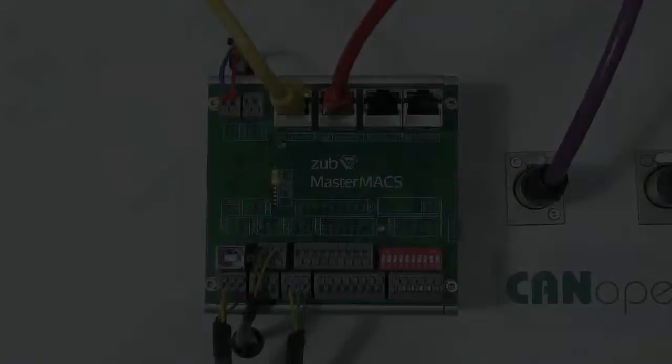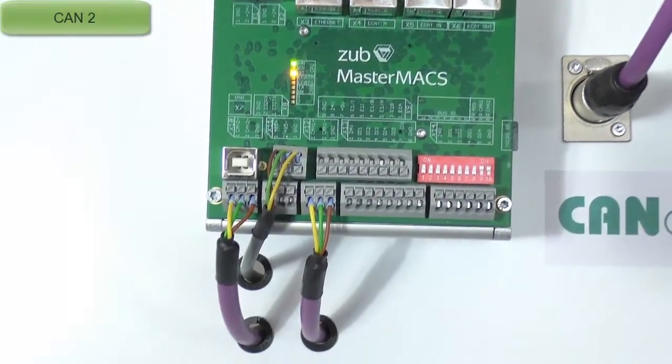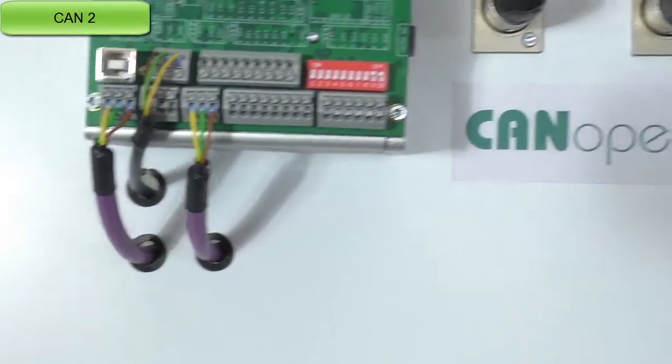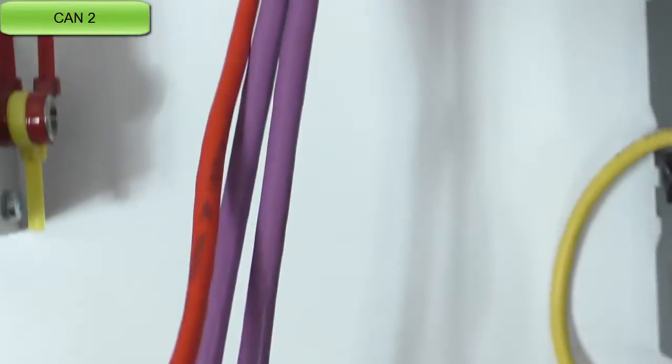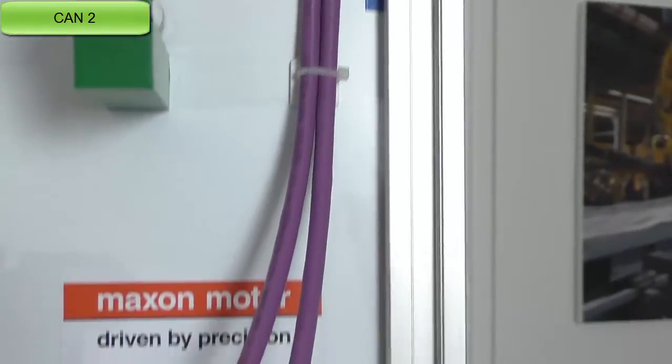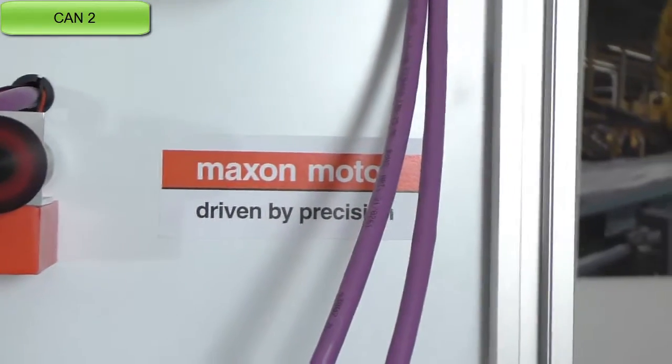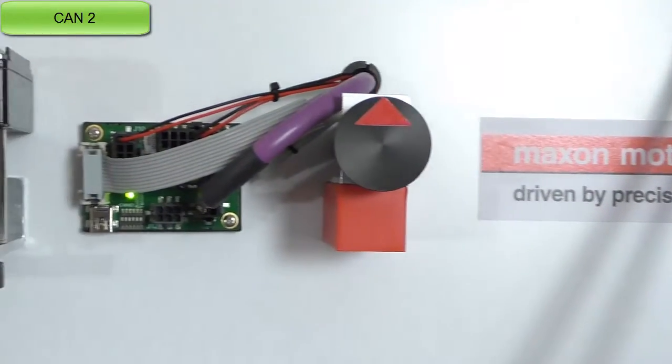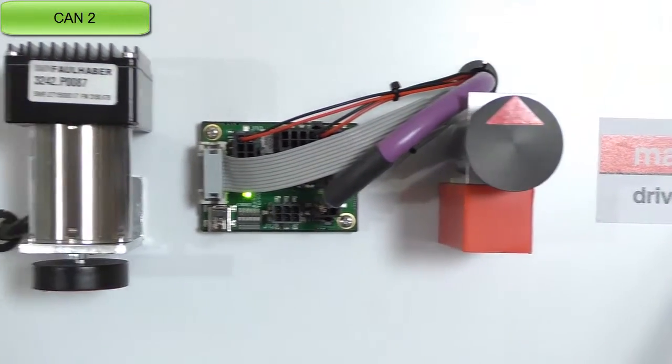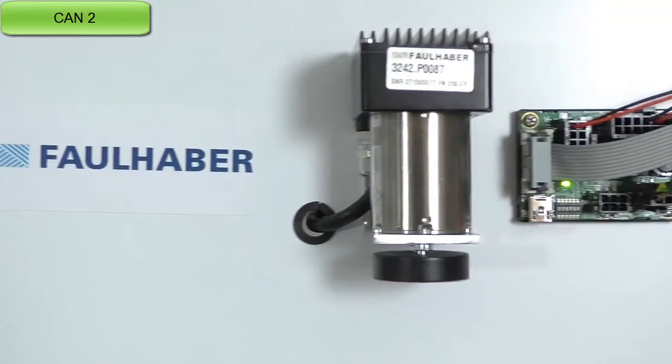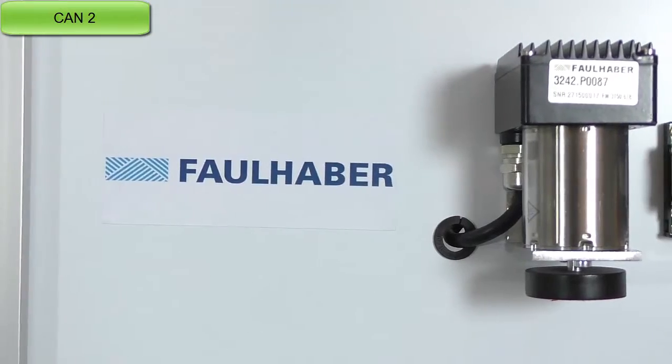Now we follow the CAN2 line which first goes to a Maxon EPOS 2 with a drive. This is a very small unit here. Then we go to a Faulhaber drive with integrated amplifier and CAN bus interface.